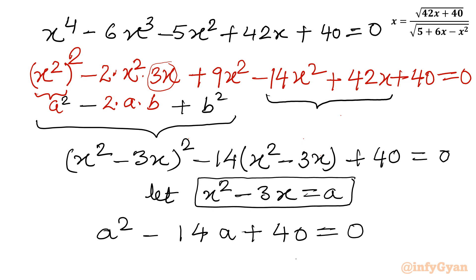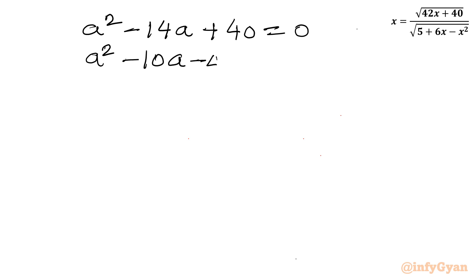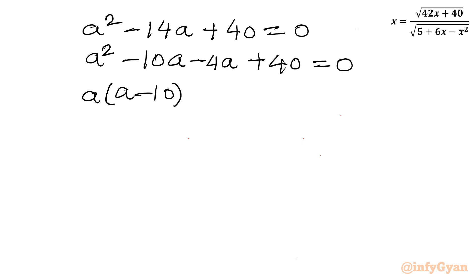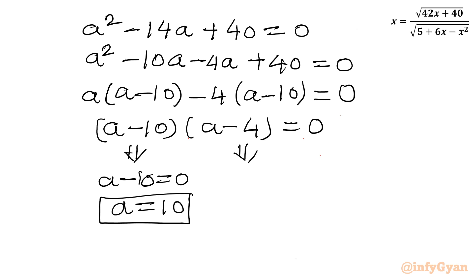With the substitution, our equation becomes a² - 14a + 40 = 0. Let's solve this quadratic using factorization. We need factors of 40 that sum to 14, which are 10 and 4. So: a² - 10a - 4a + 40 = 0, giving a(a - 10) - 4(a - 10) = 0, so (a - 10)(a - 4) = 0. Therefore a = 10 or a = 4.